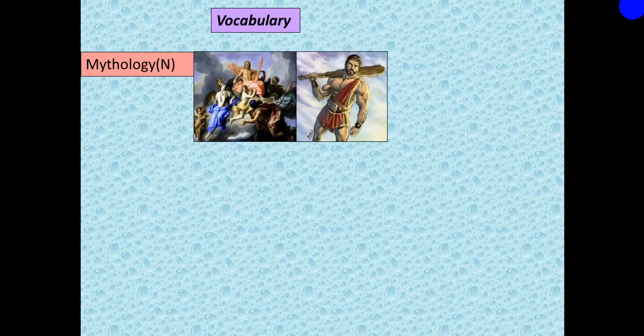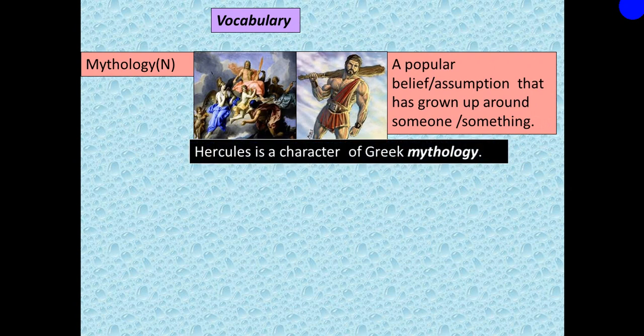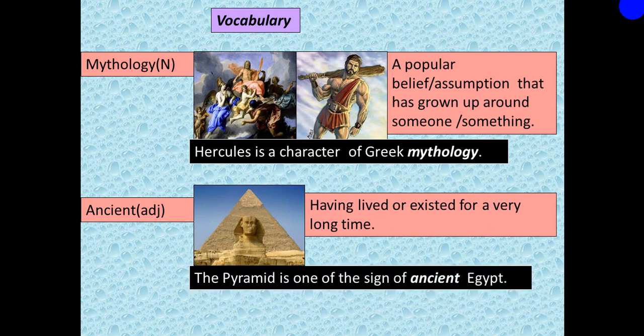The first word is 'mythology' — noun. A popular belief or assumption that has grown up around someone or something. For example: Hercules is a character of Greek mythology. The second word is 'ancient' — adjective. Having lived or existed for a very long time. For example: The pyramid is one of the signs of ancient Egypt.